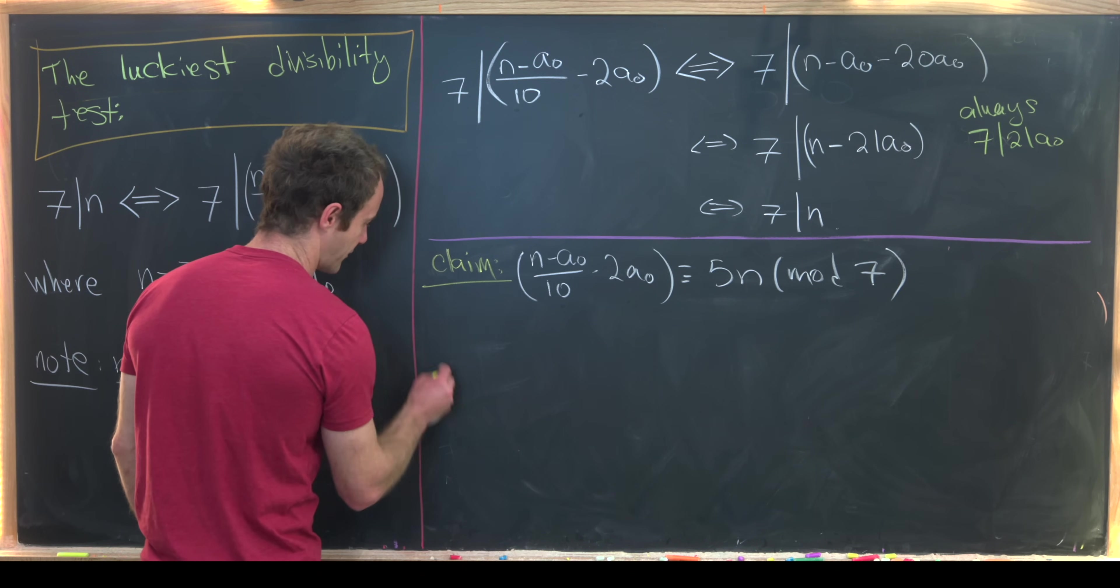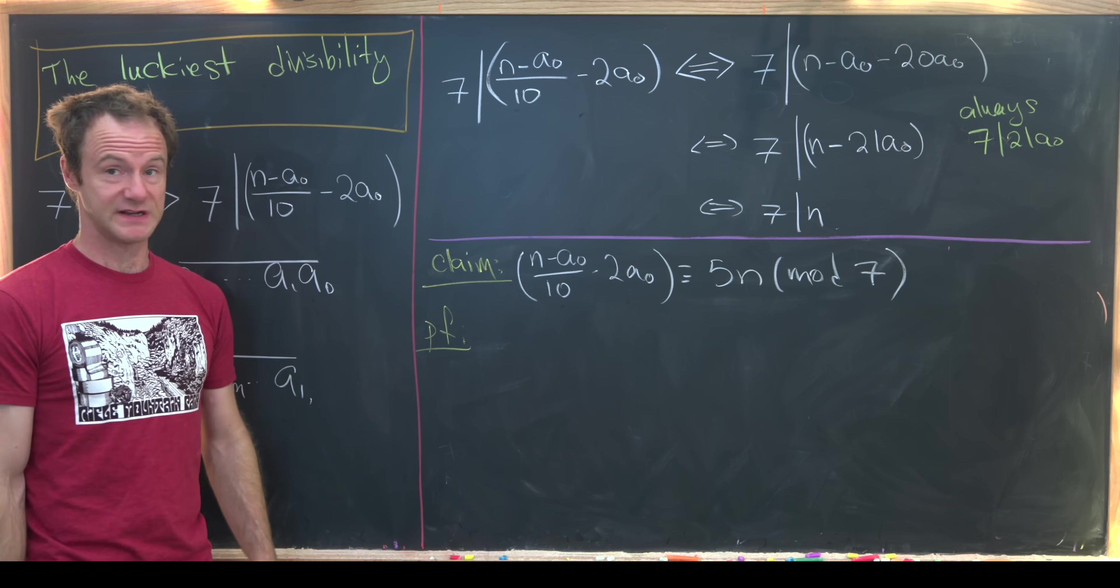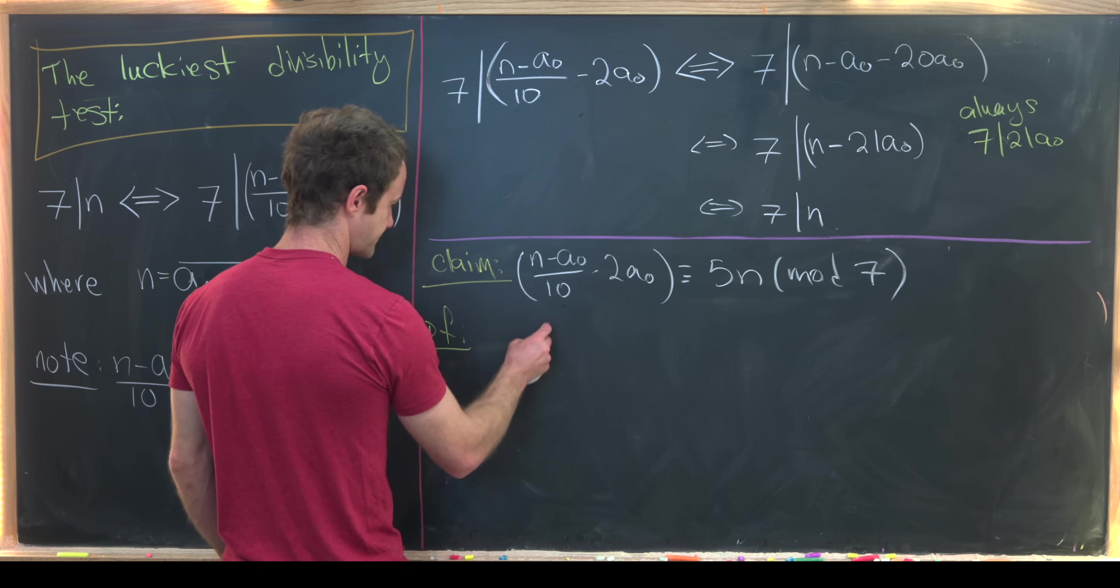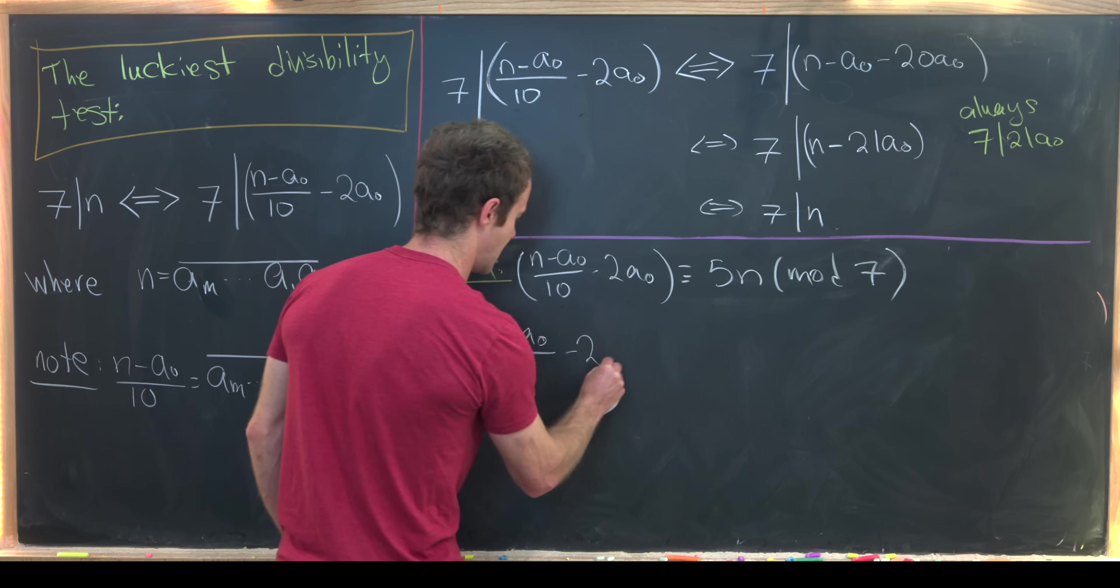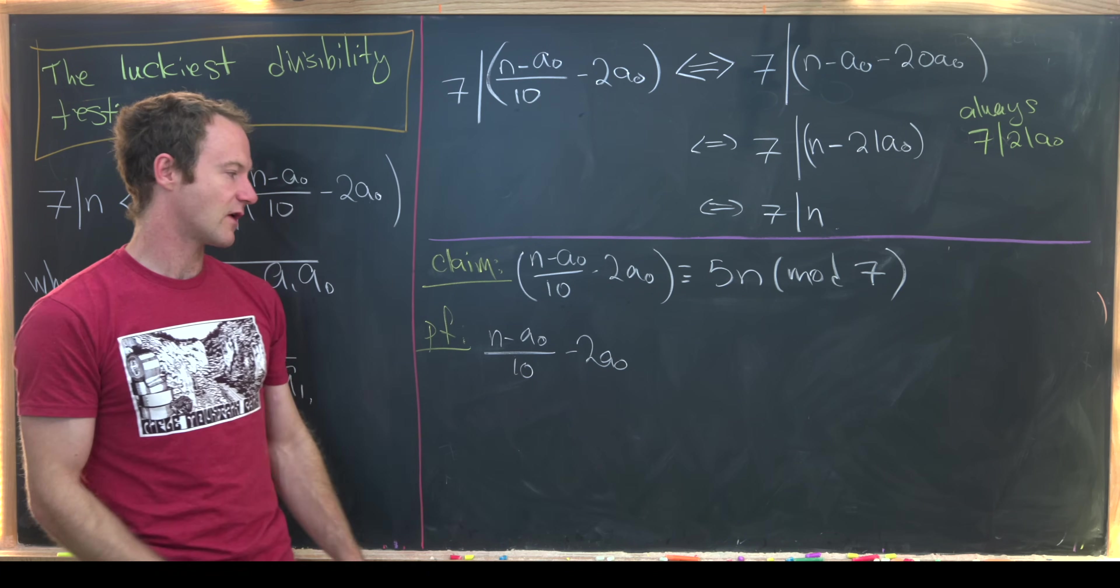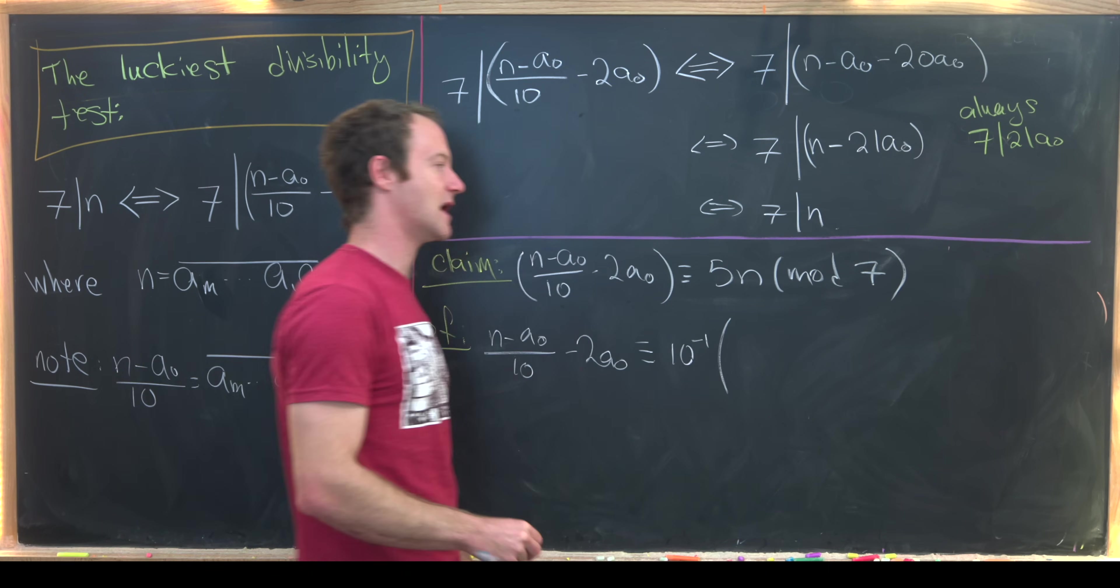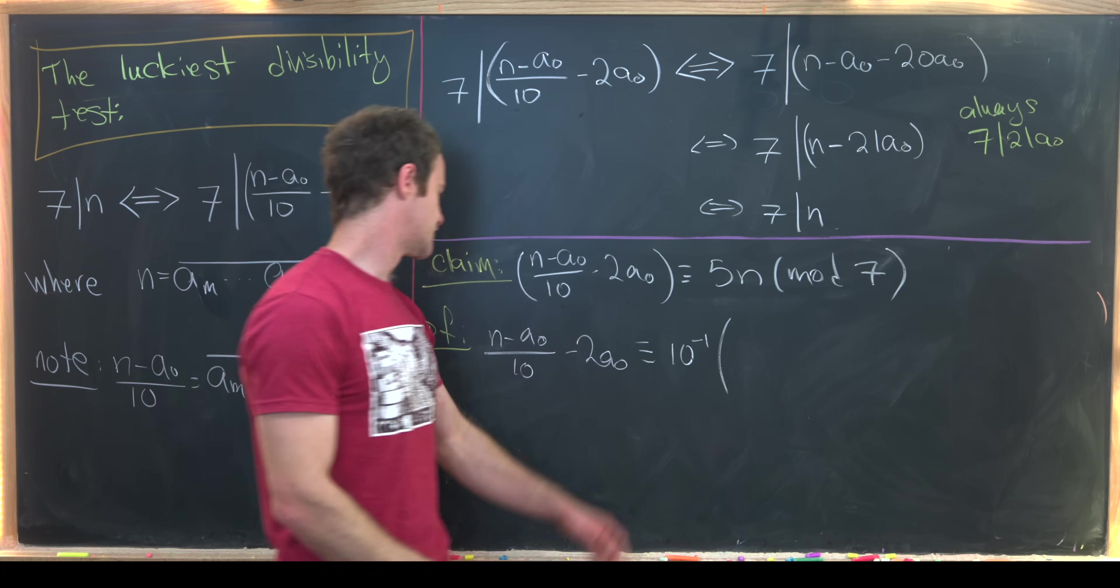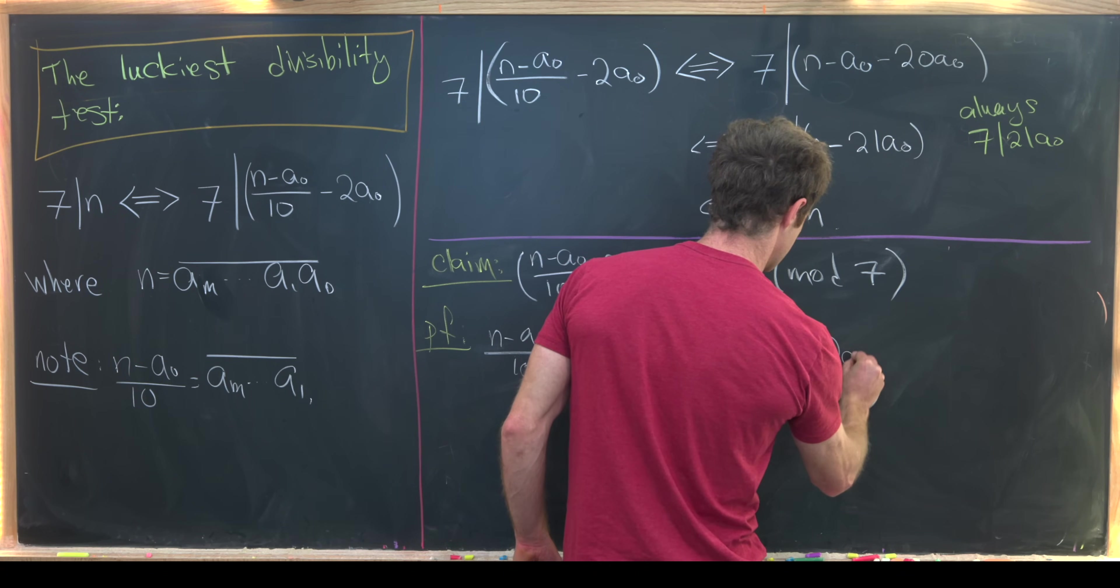Okay, so let's see how the proof of this little claim goes. And we can do that just with pretty simple modular arithmetic. So I'm going to take this (n - a_0)/10 - 2a_0. And I'll rewrite 10 as 10 inverse, keeping in mind that we're working mod 7. So we have 10 inverse times (n - a_0 - 2a_0).